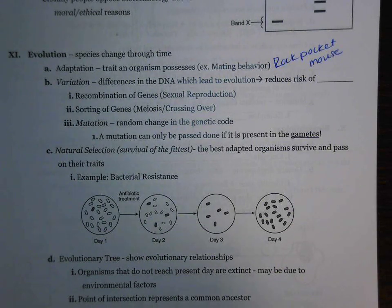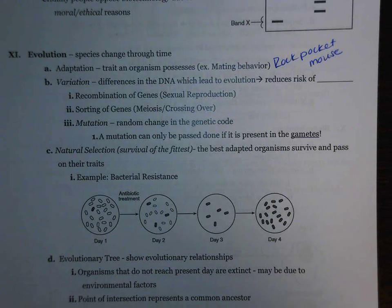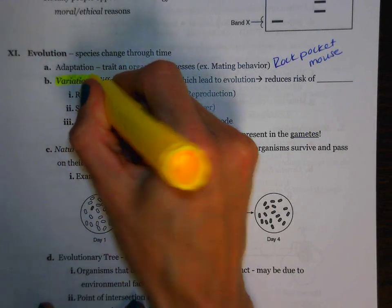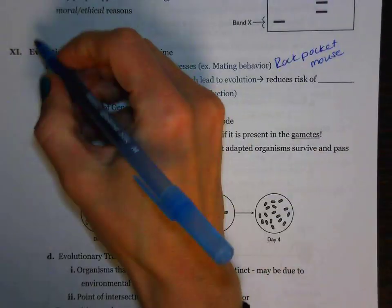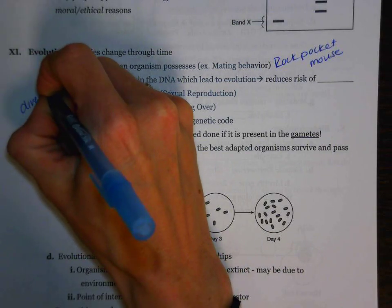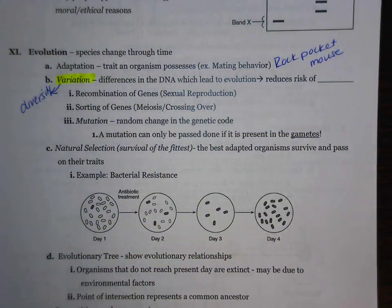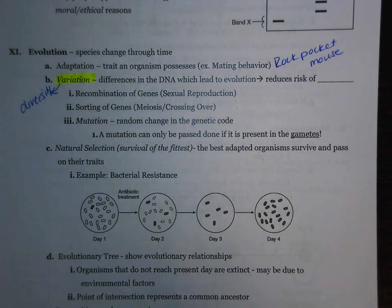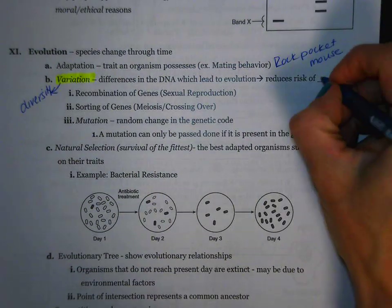Why were some of them dark colored and some of them light colored? That's what we talk about when we refer to the term variation. Sometimes instead of the word variation, you might also see the word diversity — they actually mean the same exact thing. It means differences in the DNA which lead to evolution. The really important concept in terms of variation is that it's going to reduce your risk of becoming extinct.